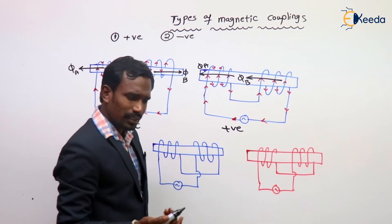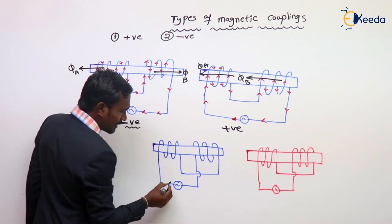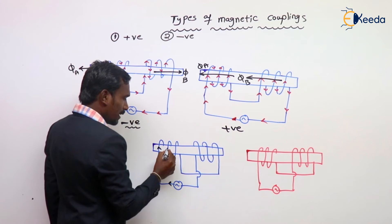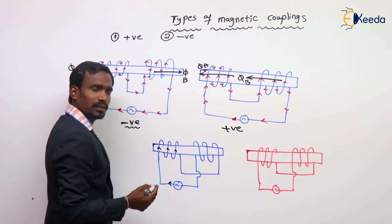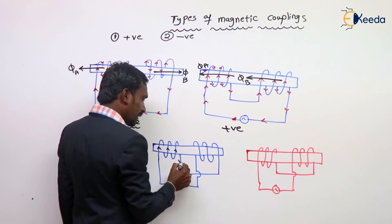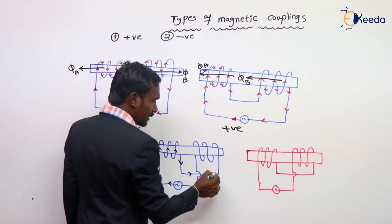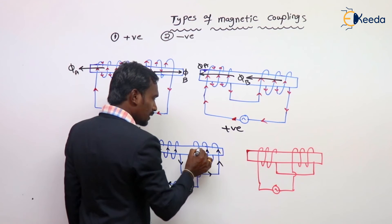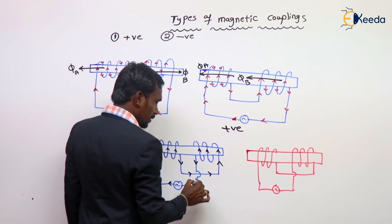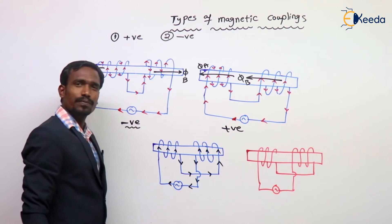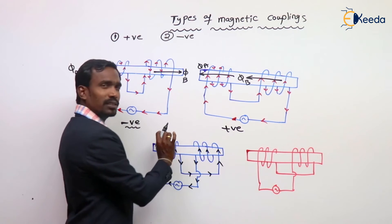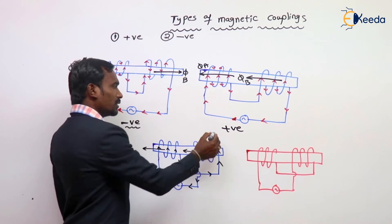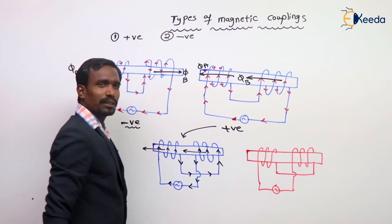Let's see. Current direction is like this: upwards here, here also upwards, here also upwards, here also upwards. Here upwards, nothing but here downwards — like this. Again here upwards, again here upwards, again here upwards. Both are upwards. So here the flux direction is in this direction. So this is a positive magnetic coupling.